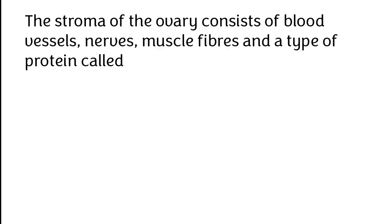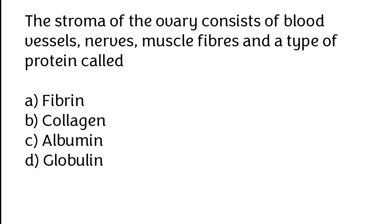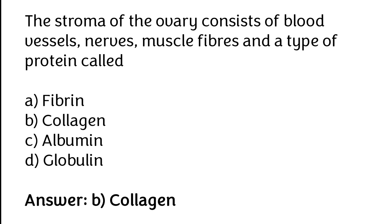The stroma of the ovary consists of blood vessels, nerves, muscle fibers, and a type of protein. What is that protein? A) Fibrin, B) Collagen, C) Albumin, D) Globulin. The correct answer is option B — collagen.